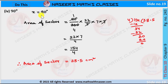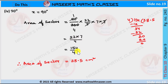Now we substitute x equal to 90 in the area of sector formula. We get 90 by 360 into 22 by 7 into 7 into 7. We cancel 7 in numerator and 7 in denominator, and 90 with 360 to get 1 by 4. After this we get 22 into 7 by 4. 22 into 7 is 154, so we get 154 by 4. After dividing, we get 38.5. Therefore, area of sector is equal to 38.5 centimeter square when x is 90 degrees.